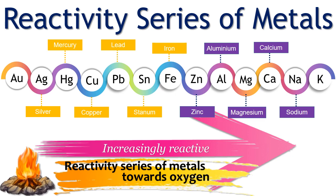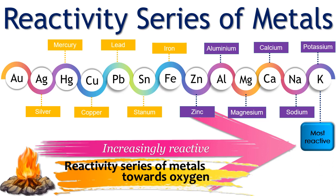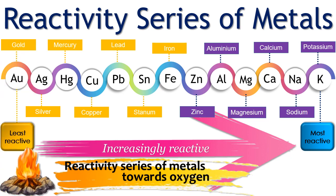The difference in the reactivity of metals when they react with oxygen enables us to obtain the reactivity series of metals. The reactivity series of metals is a list of metals arranged according to their chemical reactivity with oxygen. Metals high in the reactivity series are very reactive and react very vigorously with oxygen. Potassium is the most reactive of these metals. On the other hand, gold is the most unreactive of these metals.